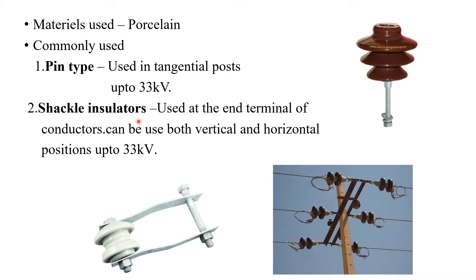Now let us discuss the major types of insulators used for overhead transmission systems. The first type is pin type insulators. They are mainly used up to a voltage range of 33 kilovolts and used in tangential posts. The next important type is shackle insulators. Shackle insulators are mainly used at the end terminals of the conductors and can be used for both vertical and horizontal positions, whereas pin type can be used for tangential position only.